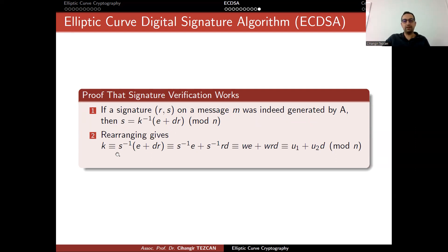Then, due to the associativity property of groups, you obtain this. But this is actually w and w times d, which is u1 and u2 d modulo n. Actually, we realize that u1 g plus u2 q actually gives you k times g. v equals to r as required. This is why the verification actually works.